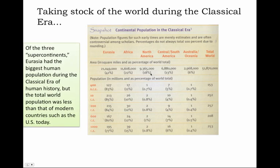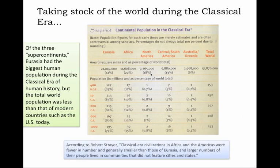Keeping in mind that the overall aggregate numbers are far less than they would be today, which has a lot to do with the tremendous population boom of the modern age. Prior to the modern age, population growth from the origins of civilization was fairly consistent and fairly static compared to what it would become in the modern era. According to Strayer, classical era civilizations in Africa and the Americas were fewer in number and generally smaller than those of Eurasia, and larger numbers of their people lived in communities that did not feature cities and states. So overall, that is a picture of population distribution during the period we are studying.